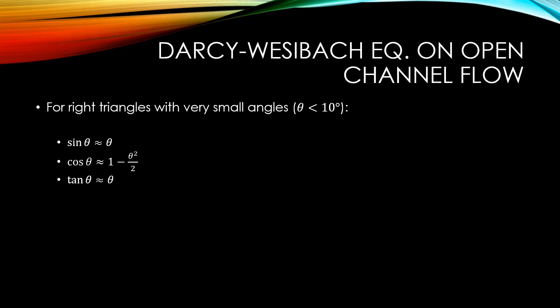Most channels in nature have very small angles, much smaller than 10 degrees. We can say that the sine of an angle is approximately equal to that angle. We can approximate the cosine of the angle to 1 minus the angle squared over 2, and the tangent of the angle to that angle. This lets us imply that the sine of the angle can be approximated to the tangent of the angle. In our case, since the longitudinal slope is equal to the tangent of the angle of inclination, we can approximate this to be the sine of the angle of inclination. We can now write this back into our geometric equations to say that the change in elevation is equal to the product of the length times the longitudinal slope.